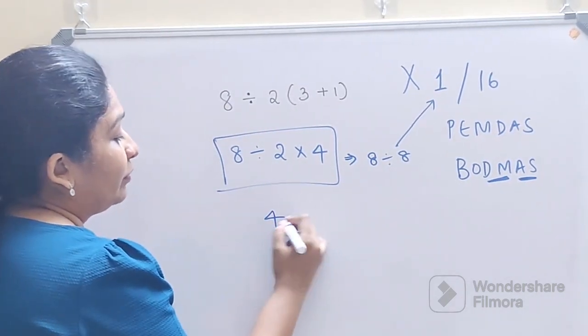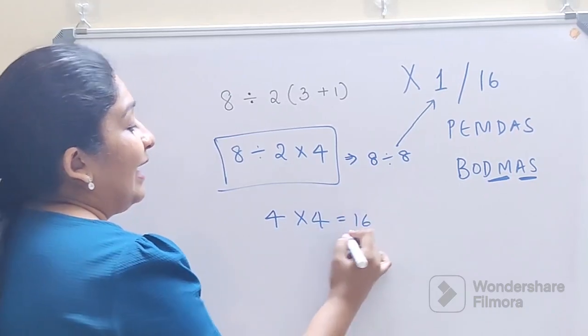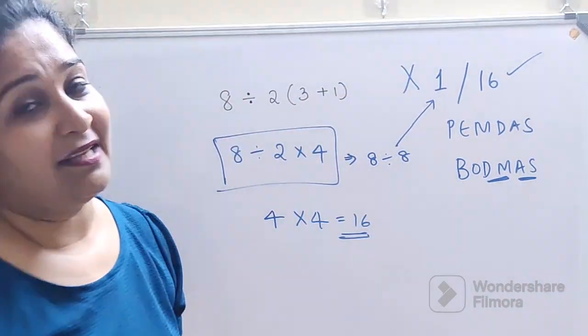So 8 divided by 2 gets you 4. 4 into 4 gets you 16. And that my dear friends is the correct answer.